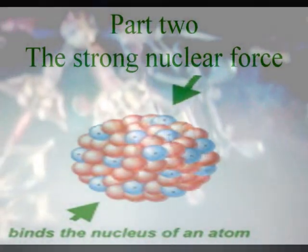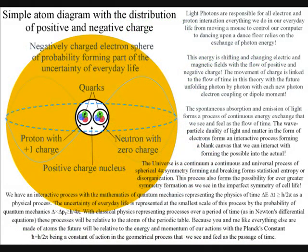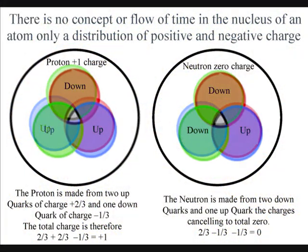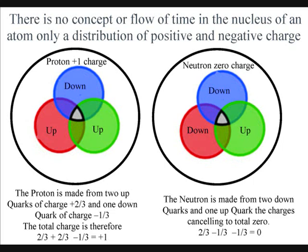For the electromagnetic force to form what we measure as a period of time, relative to the atoms of the periodic table, we need another fundamental force, and this comes in the form of the strong nuclear force or interaction. The strong nuclear force holds matter together, being a short-range force that only works inside the atomic nucleus. This is just what we need if we have an interactive process relative to the electron probability cloud that surrounds the nucleus. In other theories it can seem puzzling that there is no concept or flow of time in the subatomic world within the atoms that is governed by the strong nuclear force.